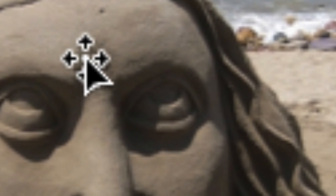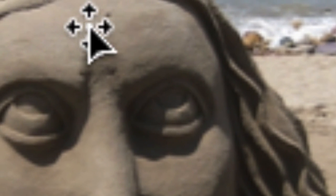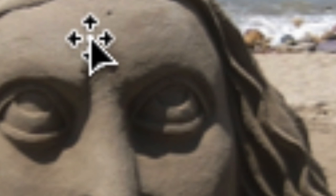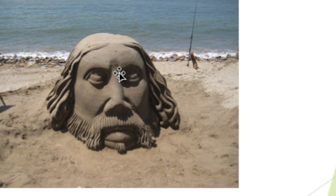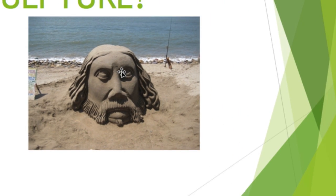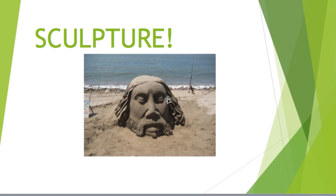Texture is how something feels. In this case, this sculpture is made out of sand, so it should feel grainy to the touch. We are able to see that with the form. The light's coming from this direction, so some of those grains of sand, divots, and other things in the sculpture are visible and show us how that sculpture feels.